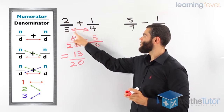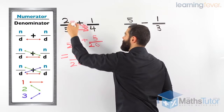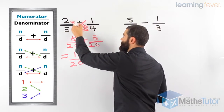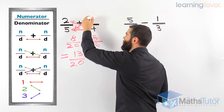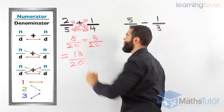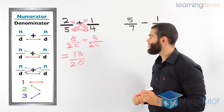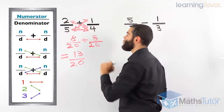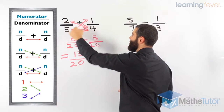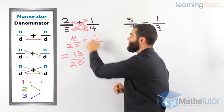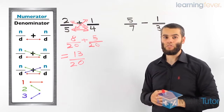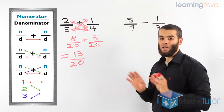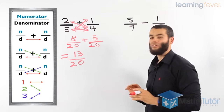We multiplied the denominators to get twenty as our common denominator. Then we multiplied the first numerator with the second denominator: four times two is eight. Then we multiplied the second numerator with the first denominator: one times five is five. With common denominators, we add eight plus five to get thirteen over twenty. We always ask: can we simplify? In this case, thirteen over twenty cannot be simplified further — that is our answer.